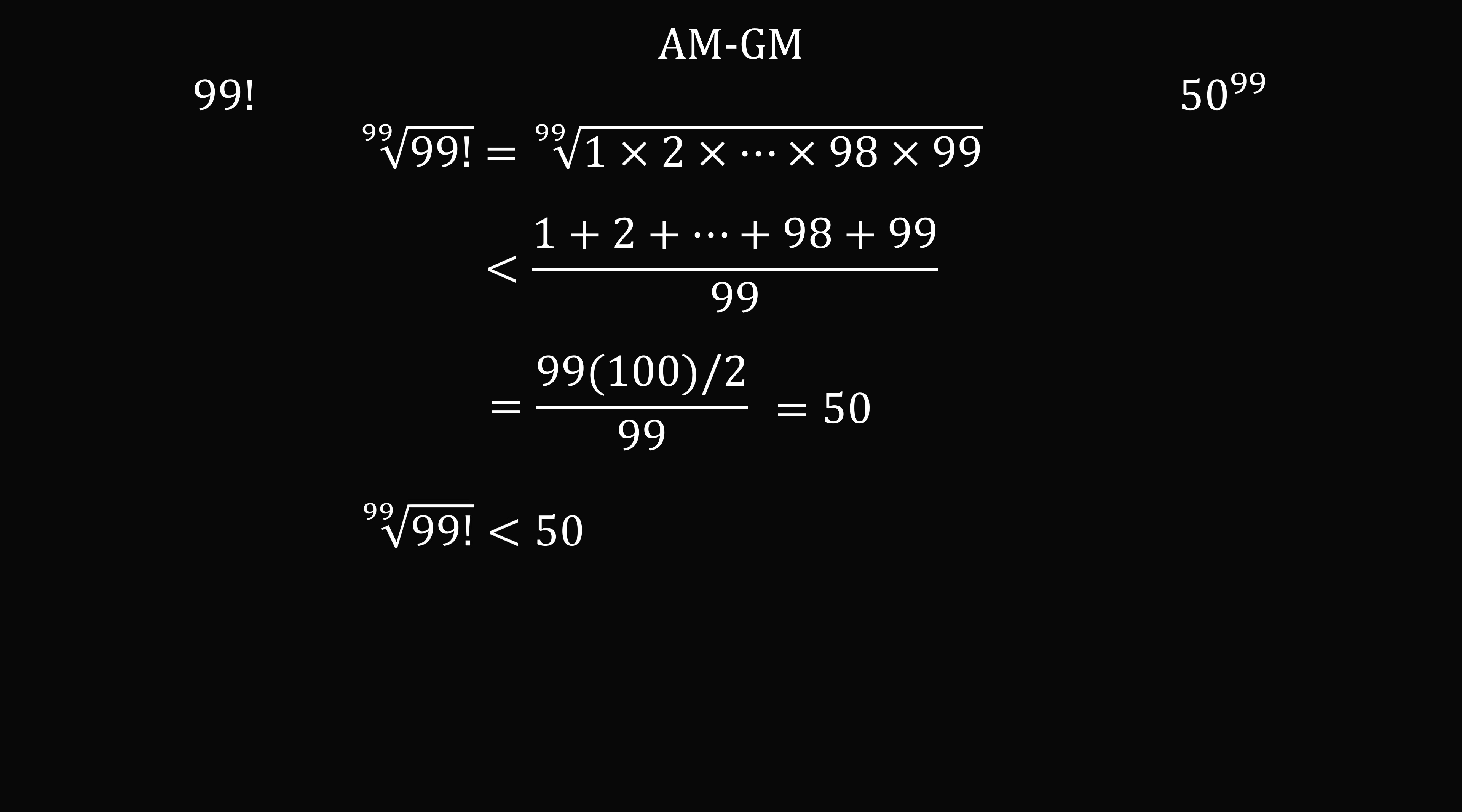So the 99th root of 99 factorial is less than 50. Raising both sides to the power of 99, we get 99 factorial is less than 50 to the power of 99. And we found the answer again.